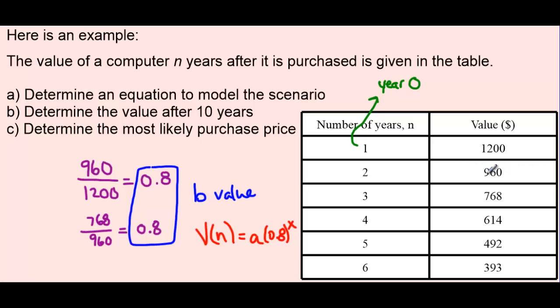I guess we have to ask ourselves, how do we get from 960 all the way to 1200? 960 times what gets us to 1200? Here's another way to think about that. We know that 1200 times 0.8 equals 960.